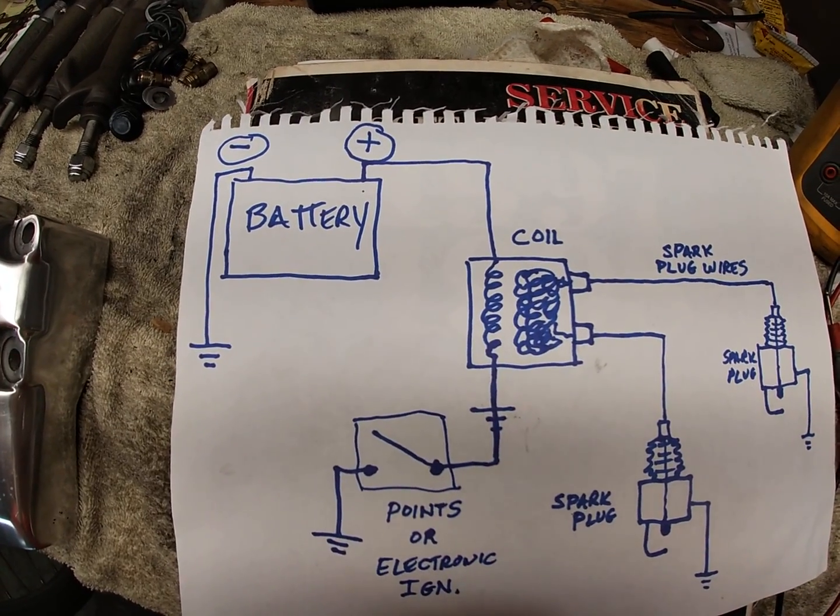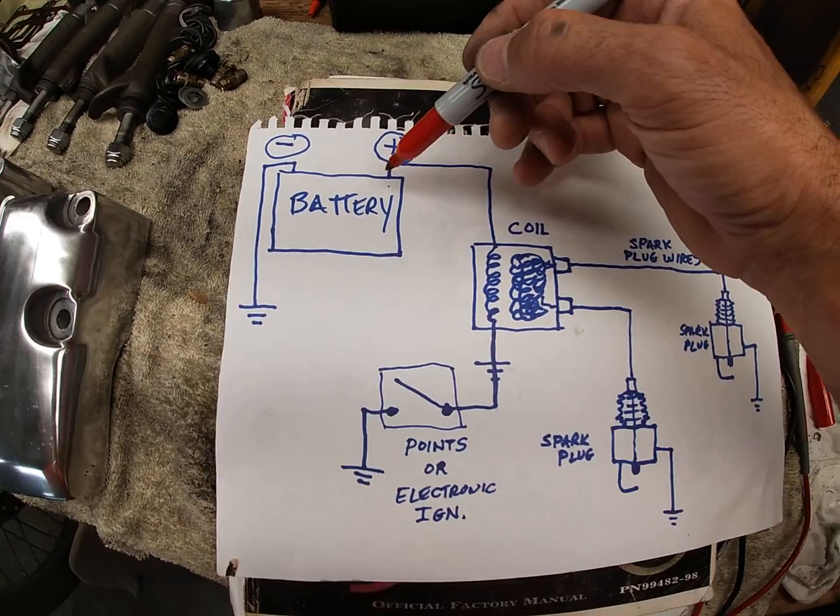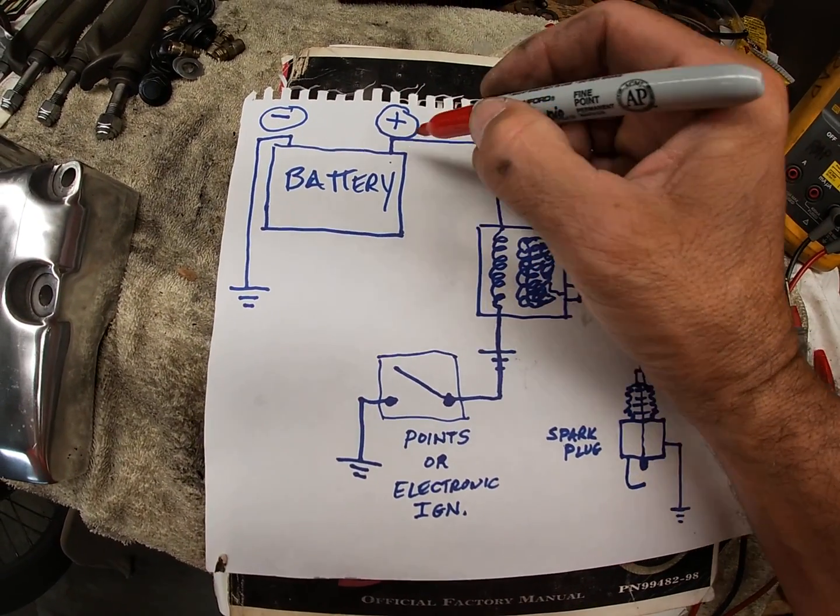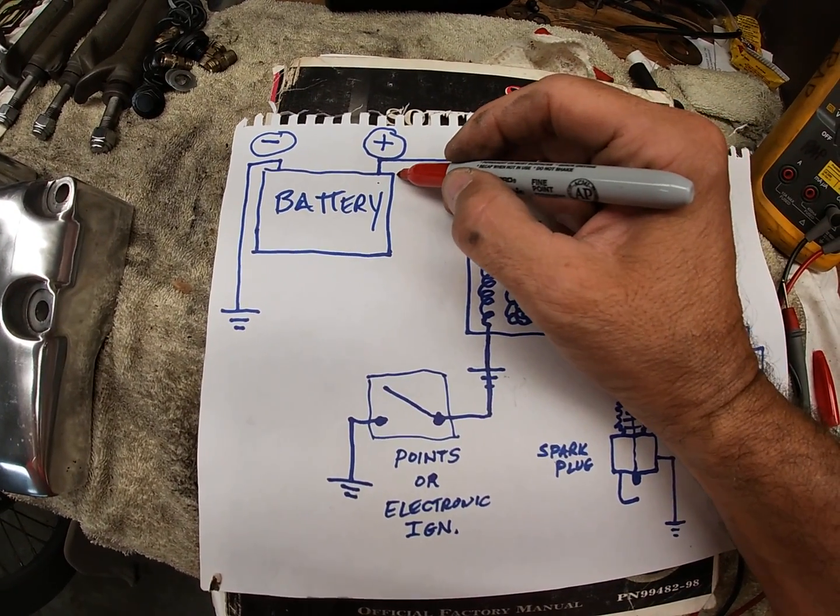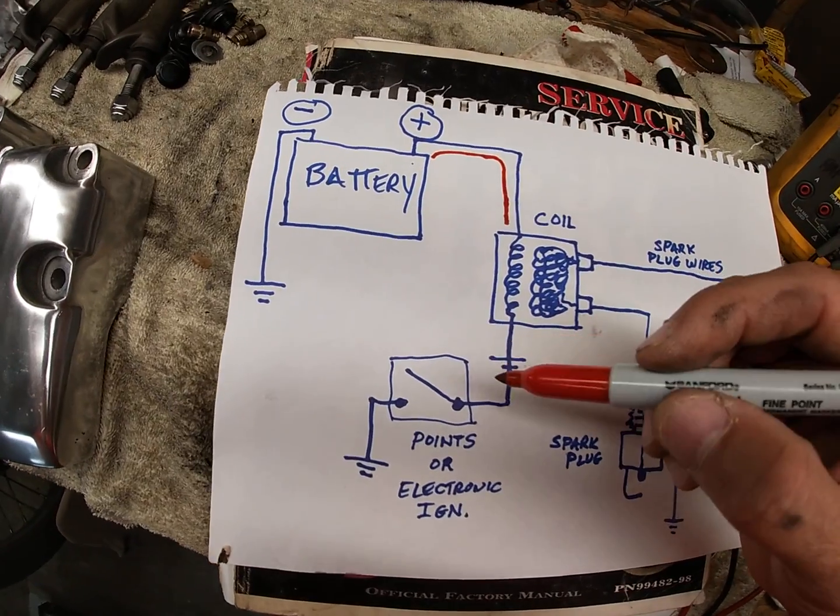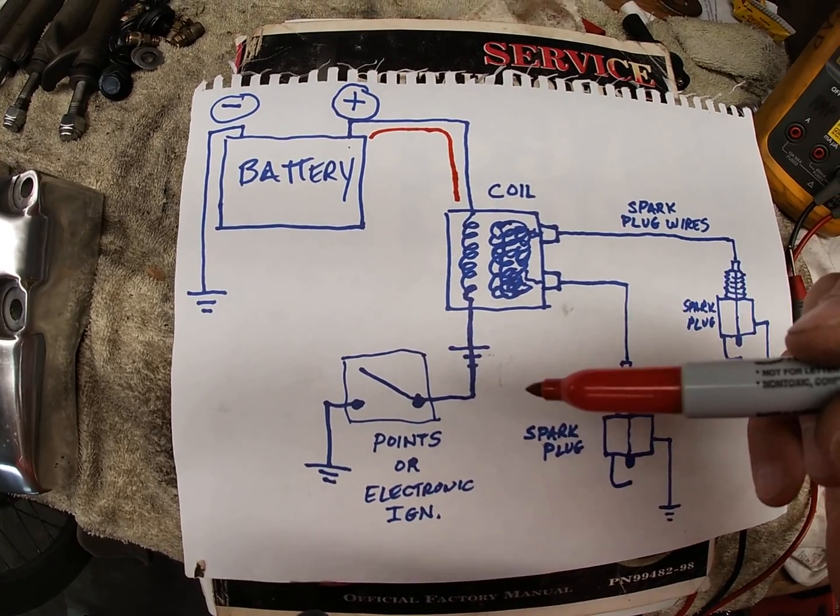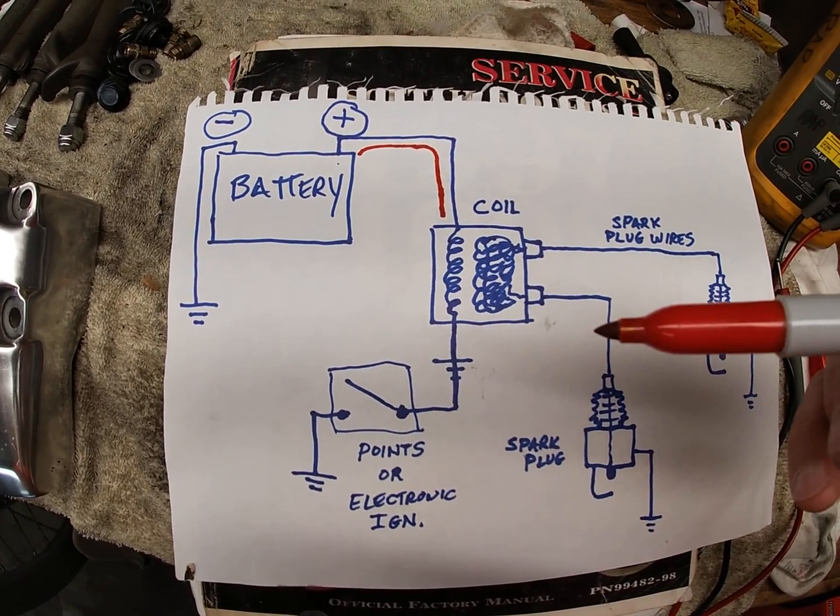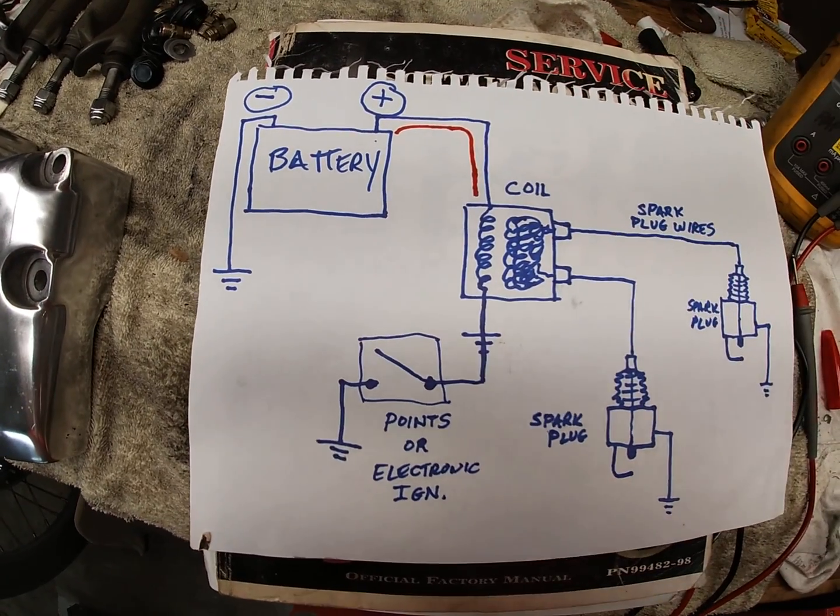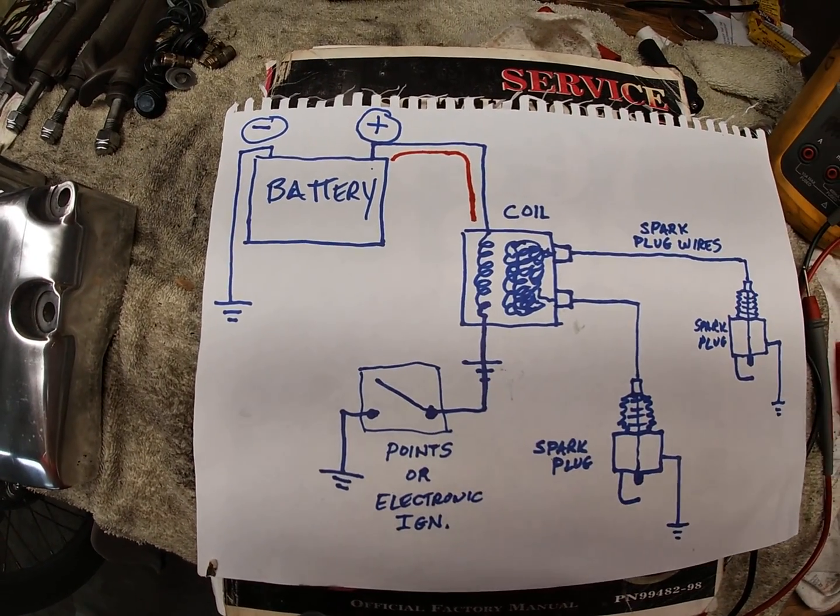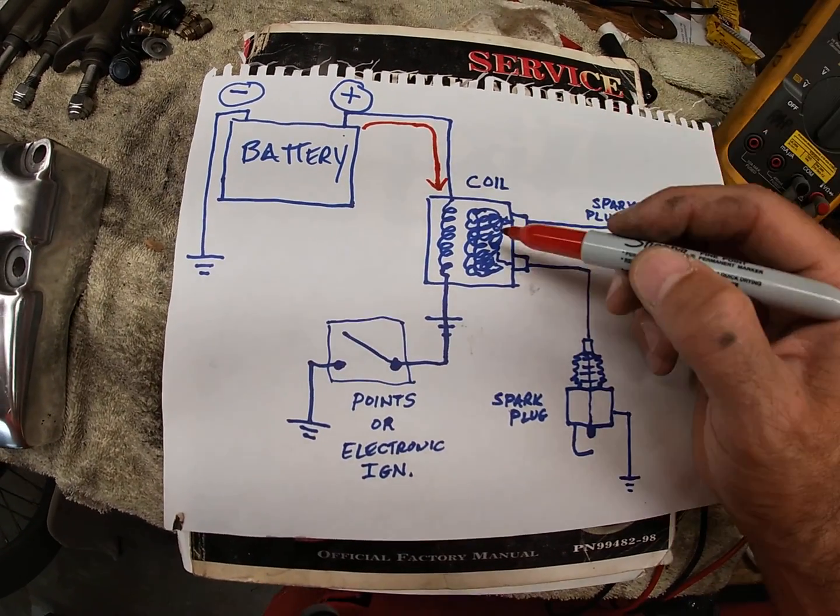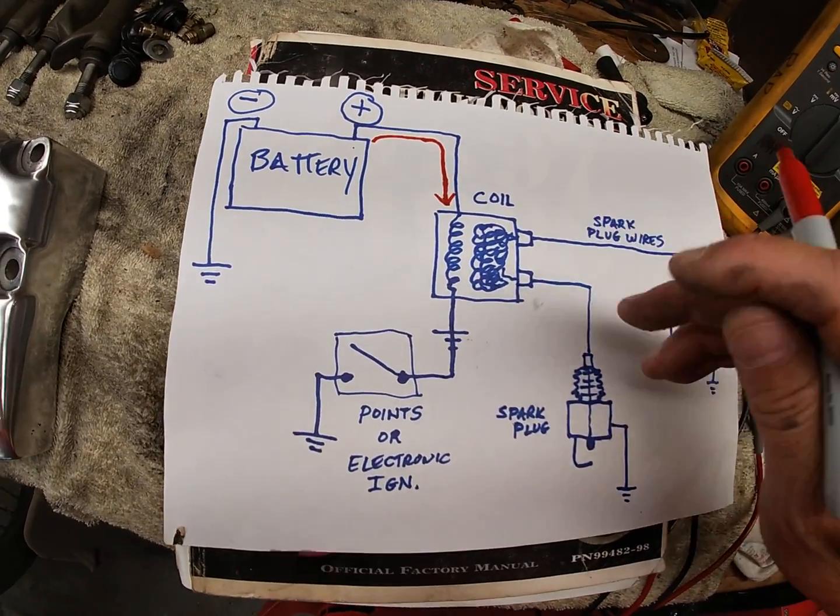When you are looking for spark out of your spark plugs, the way this works is you flow from the positive battery. Now, generally it is accepted in electronics that current flows from negative to positive. However, I'm going to show it from positive to negative because in the explanation it's easier to understand. So current flows this way over to your coil.